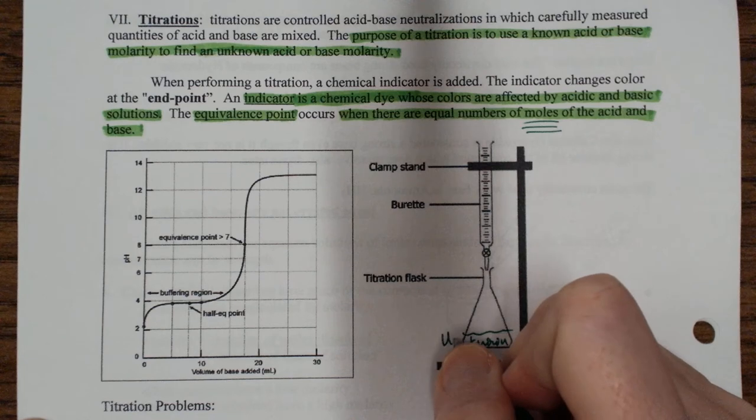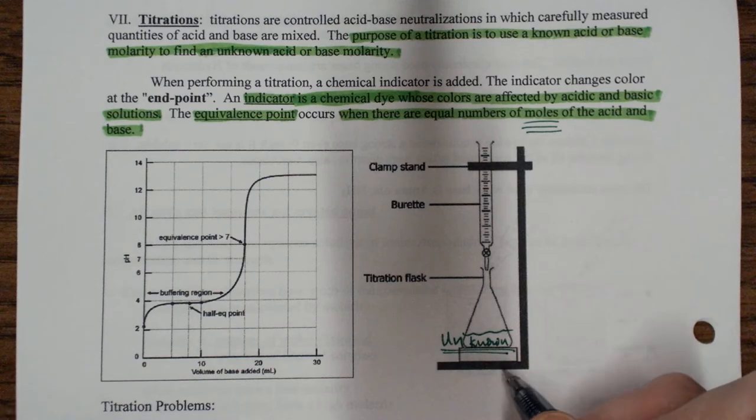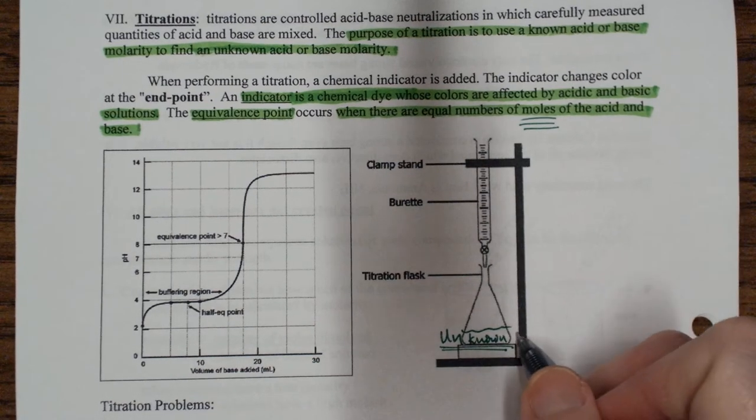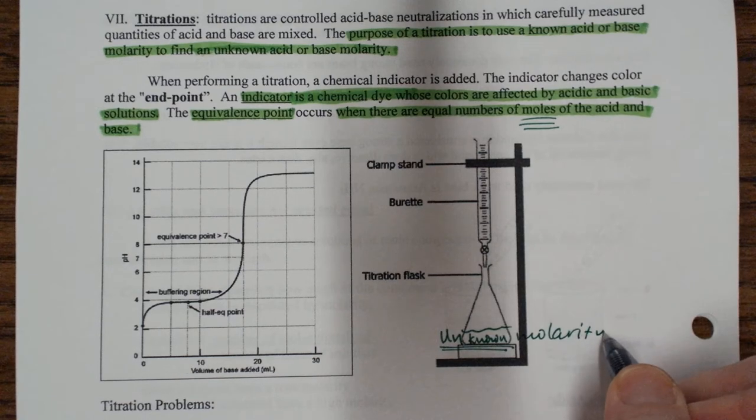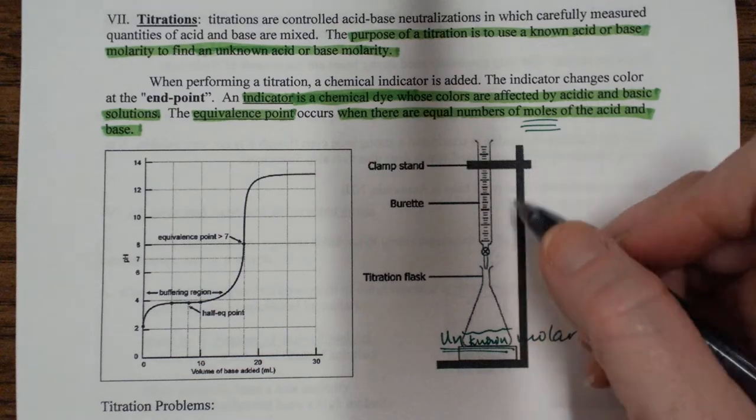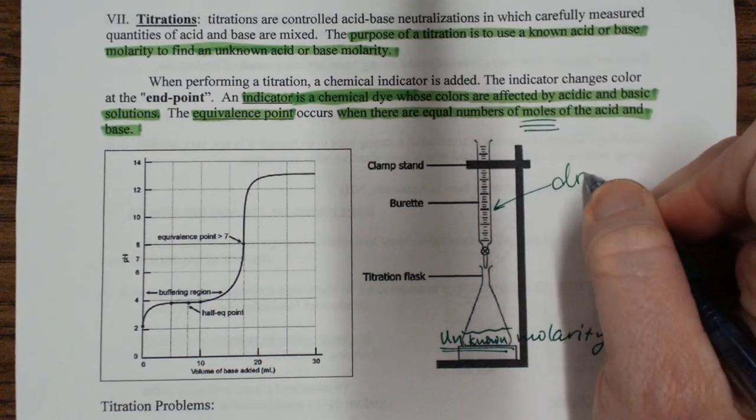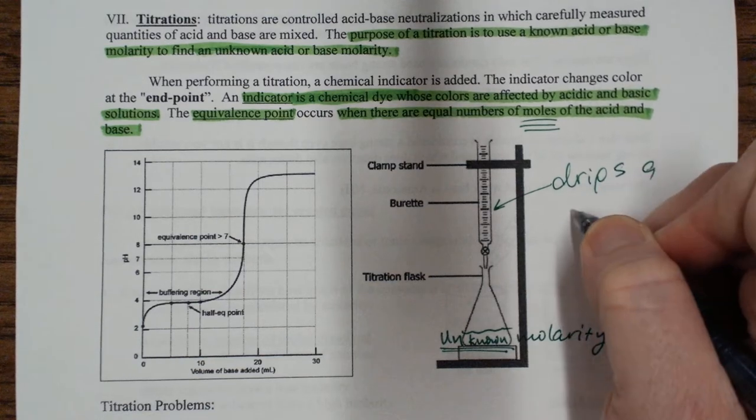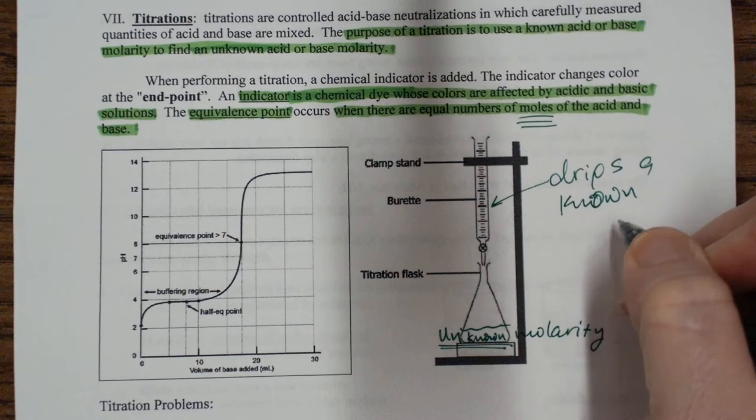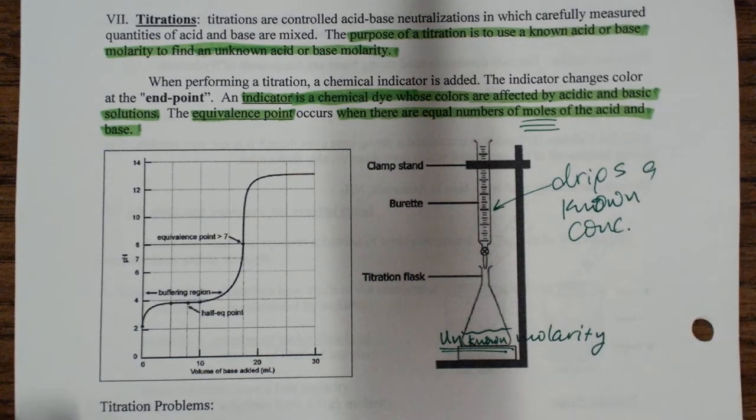We would have an unknown concentration, unknown molarity of either acid or base in the bottom of a flask, and then we would have a burette that drips in a known concentration, which means molarity, of acid or base into our unknown.